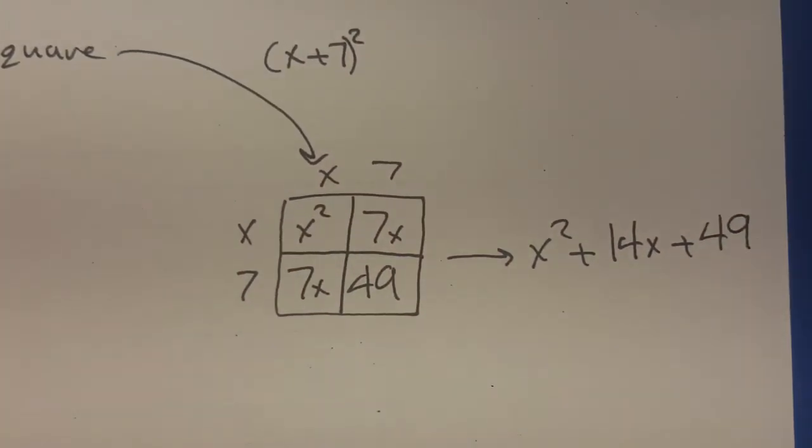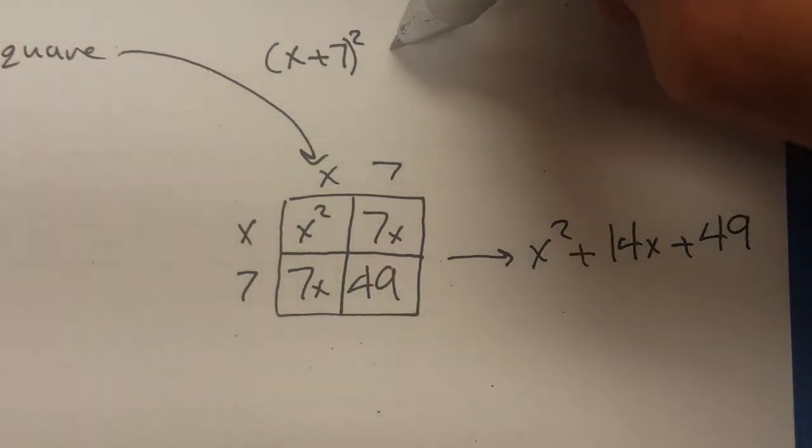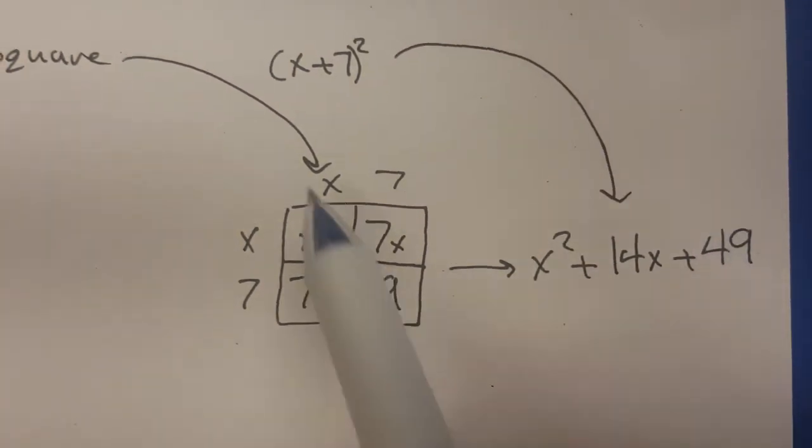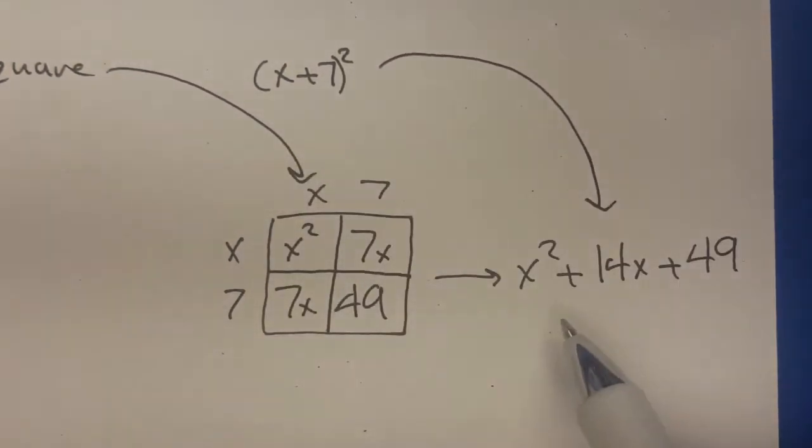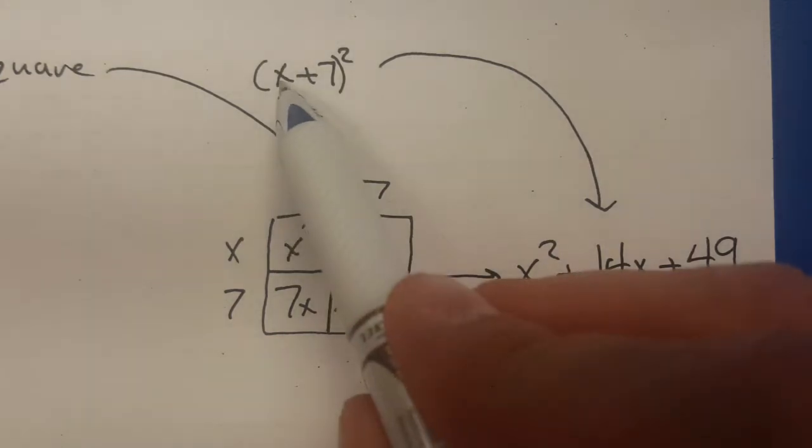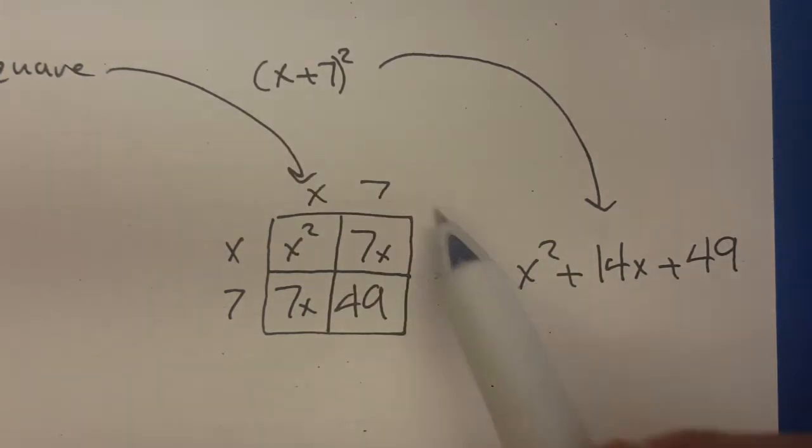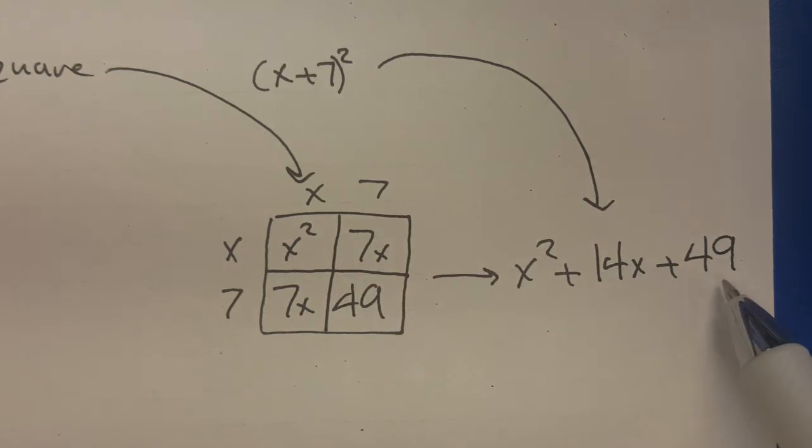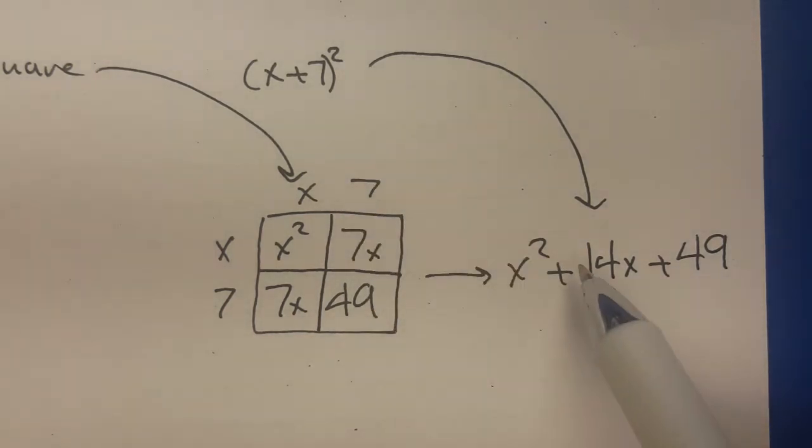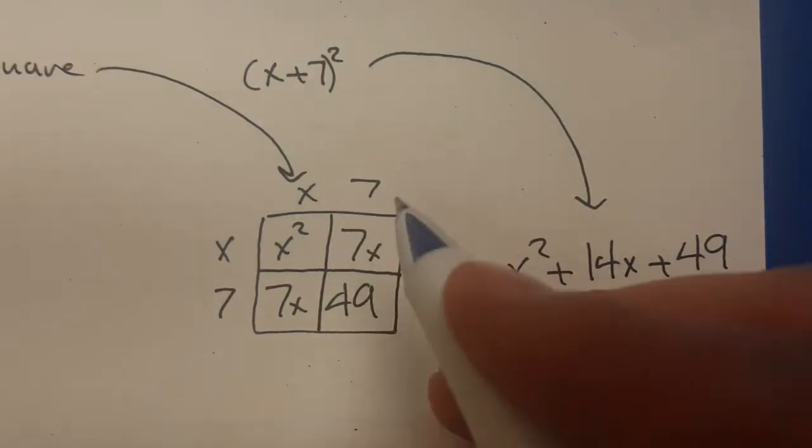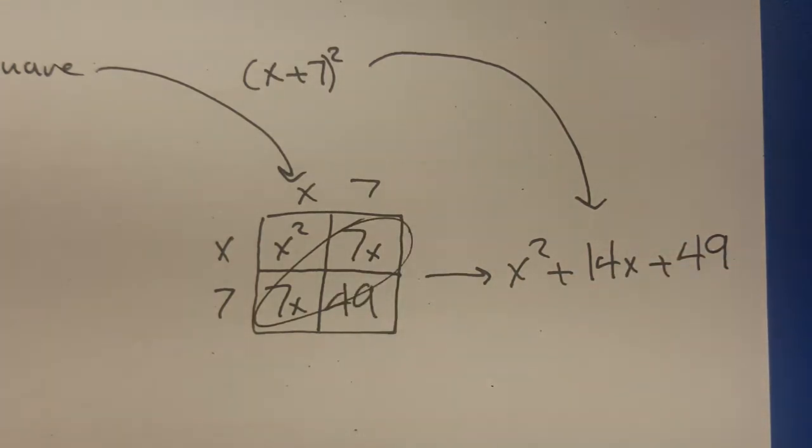Remember the shortcut, all the way from chapter 8, is that if you see x plus 7 squared, you would start with a square. You would square the first thing, x squared, you would square the second thing, 49, 7 squared, and then there'd be a double combo in the middle. Because remember, this would always happen. There'd always be two of them.